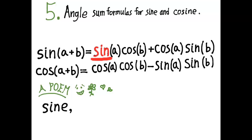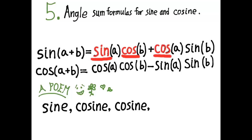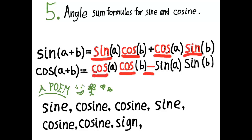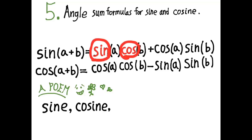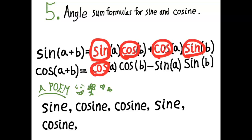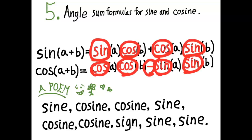The poem goes: 'Sine, cosine, cosine, cosine, sine. Cosine, cosine, cosine, sine, sine.' Notice that the SIGN in the poem corresponds to the minus sign in the cosine formula. Hopefully that helps you remember it.